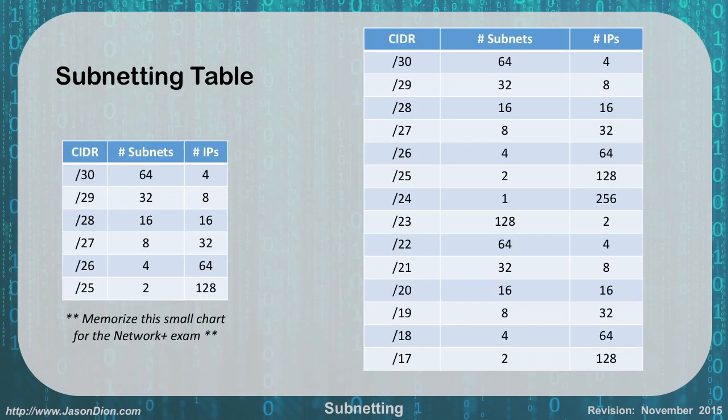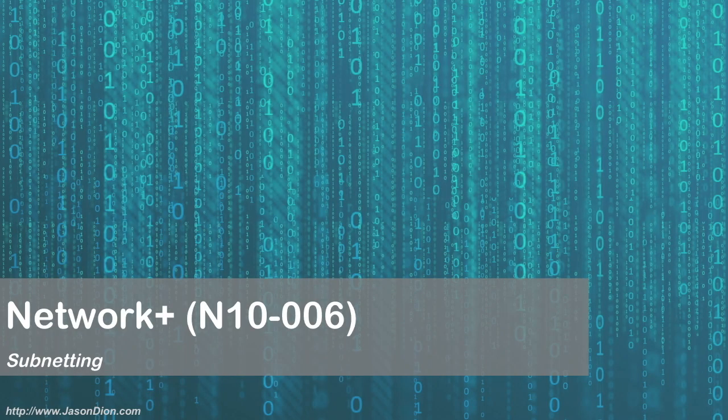For subnetting, you can either memorize the entire chart from slash 8 to slash 30, or learn how to calculate it as we did in this lecture. For the Network+ exam, the most common ones are slash 25 through slash 30. If you're comfortable with those and can determine the number of subnets and usable IPs, you'll do fairly well on the exam. And that covers the basics of subnetting.